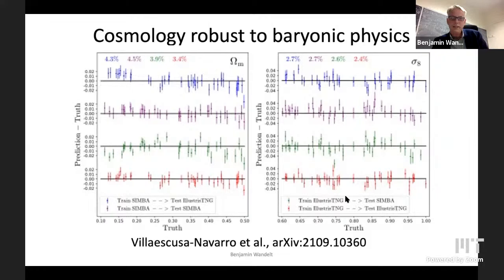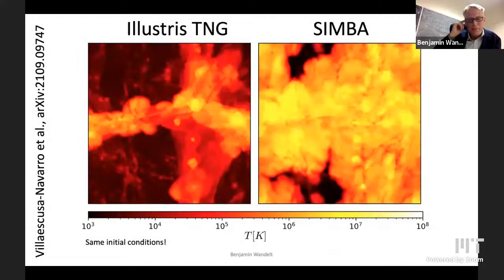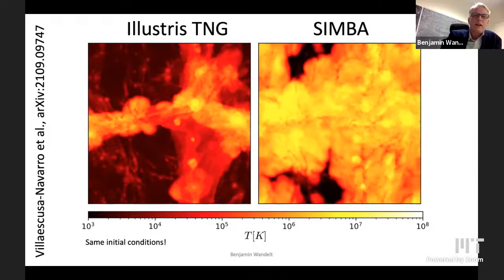Lest you think this is because the simulations look exactly the same — no. This is one single same initial conditions run through IllustrisTNG and SIMBA. Showing the gas temperature, you can see they are quite different. The way that feedback is handled in these simulations is quite different and gives quite different results. Nevertheless, the total mass seems to be robust. And of course, that is what lensing is sensitive to.